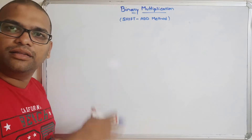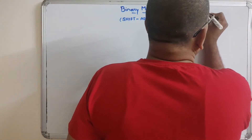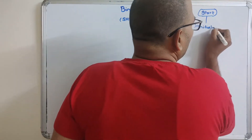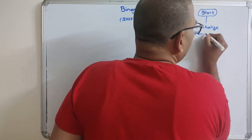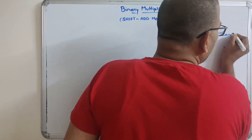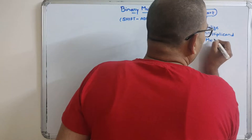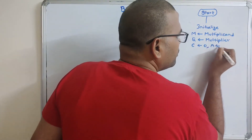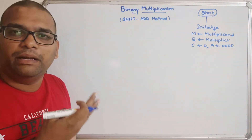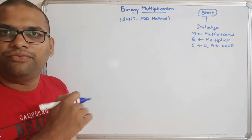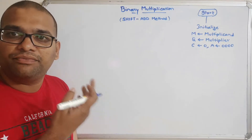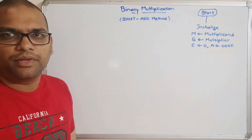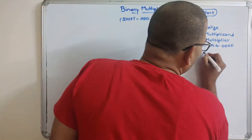Let us write down the procedure first and then we'll see an example. I'll draw the flowchart. This starts with initialization: multiplicand is assigned to M, multiplier is assigned to Q, carry is initialized to 0, and the accumulator is initialized with zeros. If you are considering a 4-bit number, initialize the accumulator with four zeros; for 8-bit multiplication, initialize with 8 bits. The accumulator acts as a buffer. N is the number of bits.